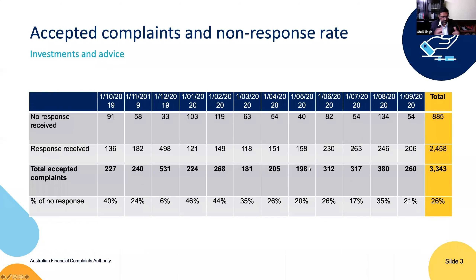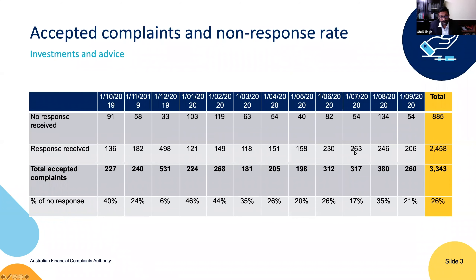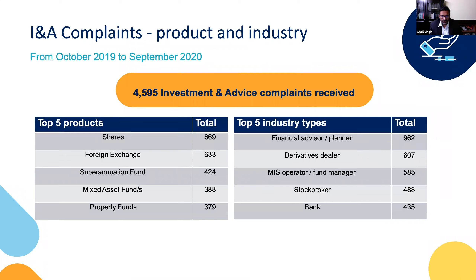One of the big ones in the press currently, certainly in the WA press, is the Sterling First Group, which is one we're looking at and have issued a decision on — available on our website if you're interested. Of the complaints received, we accept 3,343. We don't accept all of them. We do like to show something we're not too happy with: in September we had 54 non-responses out of 260 complaints, which isn't ideal — it means things are delayed because we haven't heard from the firm. Tip one: if you do have a complaint, we really encourage a response as quickly as possible.